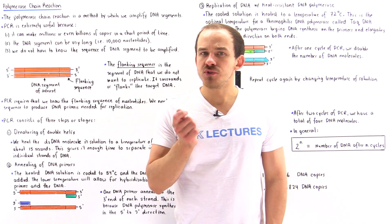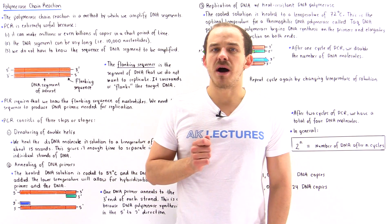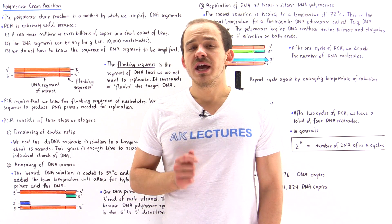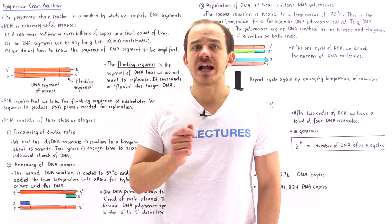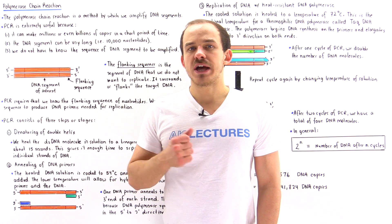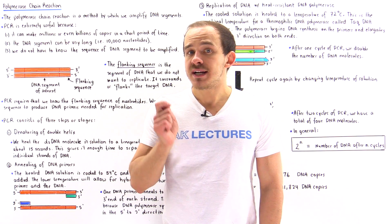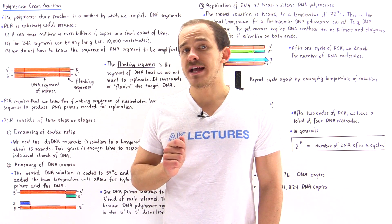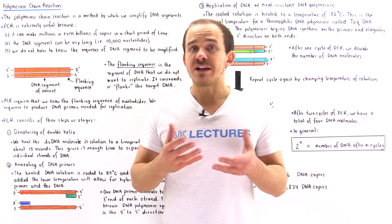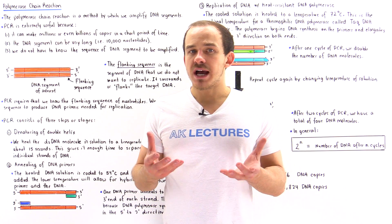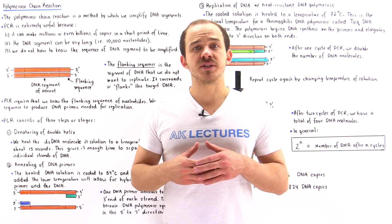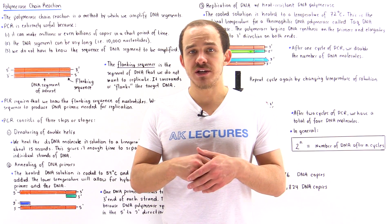Suppose you have a double-stranded DNA molecule containing a gene that you want to study. Before you can study that gene, you have to make many copies of it, so that once you have many copies at your disposal, you can carry out a variety of different types of experiments with that particular gene of interest.